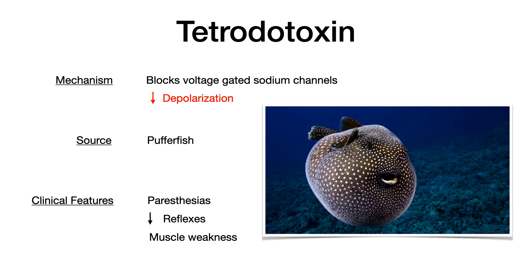The source of tetrodotoxin is pufferfish. You don't need to know pictures of fish — luckily we don't have to know the individual fish. Just know that tetrodotoxin comes from pufferfish, and the mechanism — which is the highest yield part — is decreased depolarization due to blockade of voltage-gated sodium channels.